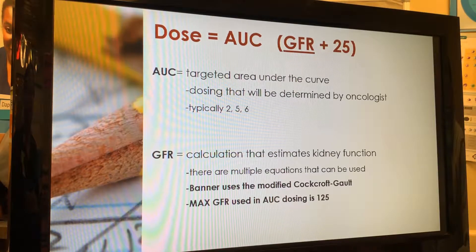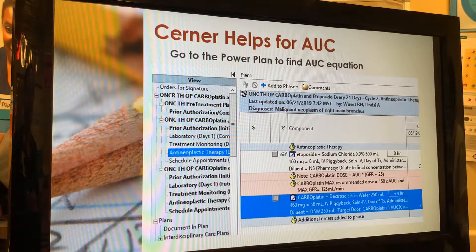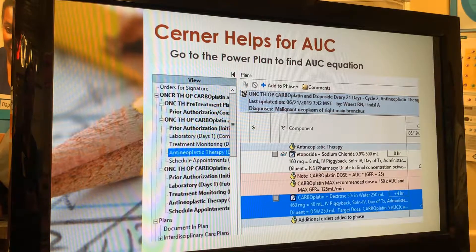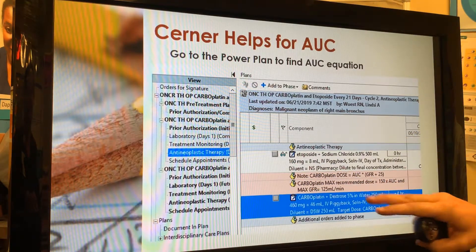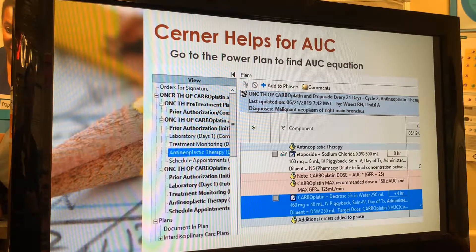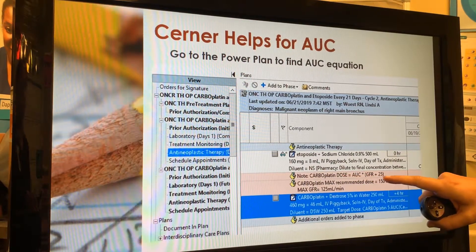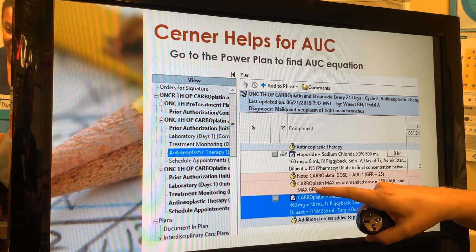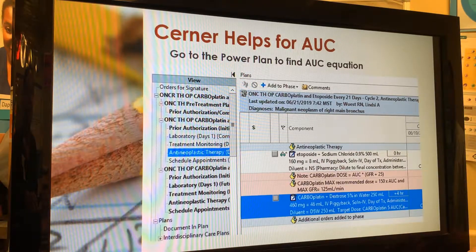In Cerner, especially in nursing, there are places that will help you find the AUC information — you don't have to memorize the equation. When you pull up the anti-neoplastic therapy power plan for carboplatin, anything in pink is there to help with understanding and baseline information. For a carboplatin dose, there are two notes: one spells out the equation, and the second reminds us that the maximum GFR used for AUC dosing is 125 — so the max dose will be the desired AUC times 150.